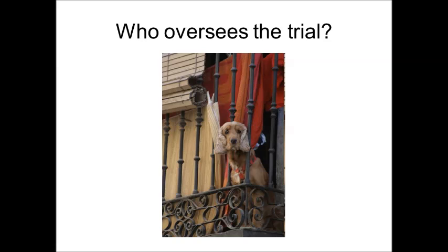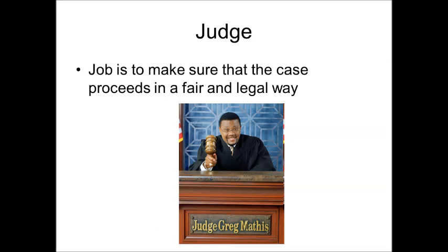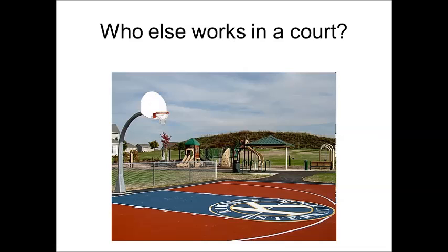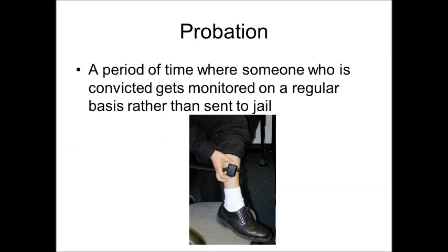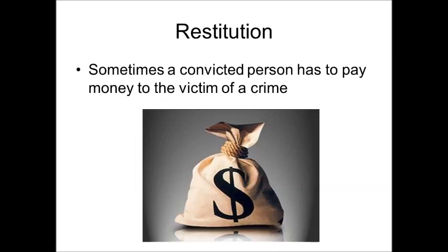If a person is found not guilty, they are known to be acquitted, or they go through acquittal — meaning they were not found guilty. If a person is found guilty, they are going to be sentenced. The judge has the power of sentencing the person. The more times you've committed a crime, or the more of a repeat offender you are, the harsher and more severe the sentence is going to be. That's where the three strikes rule comes in — if you do something over and over, your punishment gets worse and worse the more you do it.